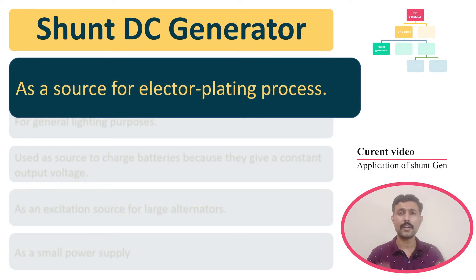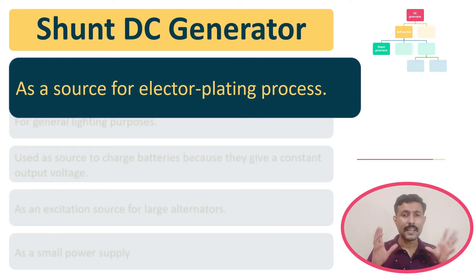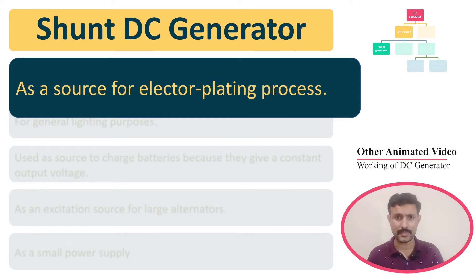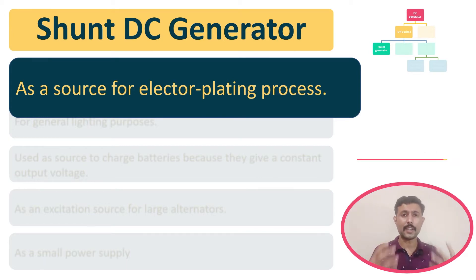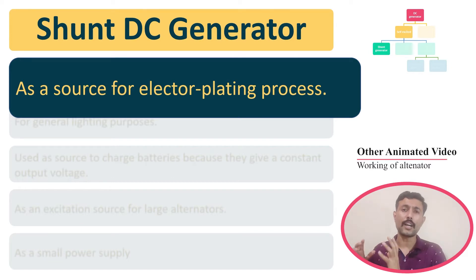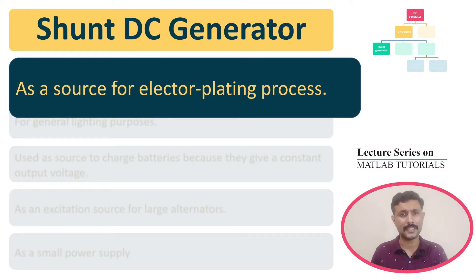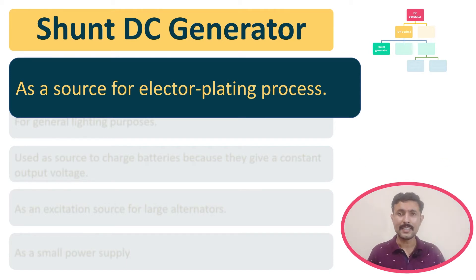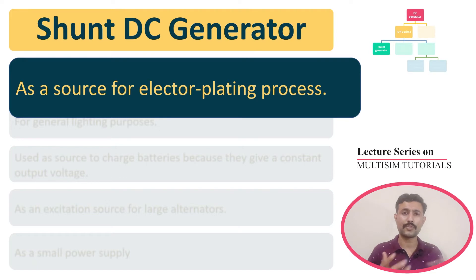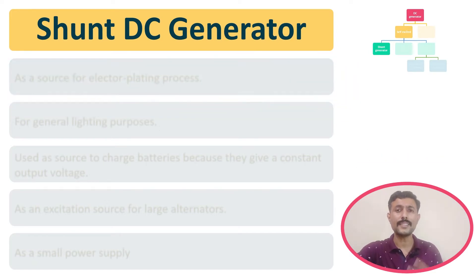The first application of DC shunt generator is that it is used as a source for the electroplating process. Generally, the requirement of electroplating is constant output voltage. If you can provide constant output voltage, then that process can be done easily — and a DC shunt generator can serve as that source.